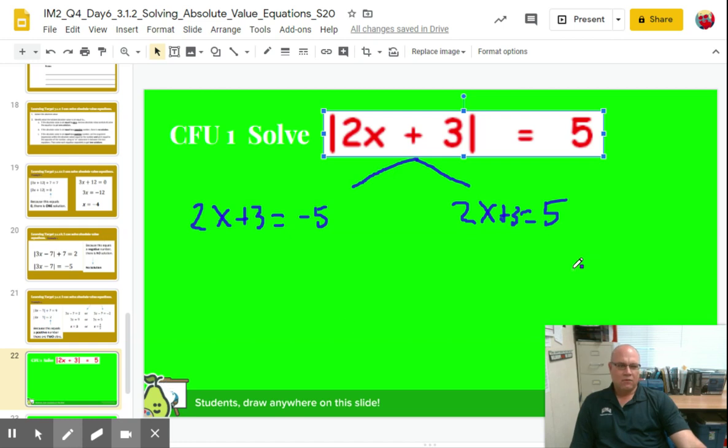All right, so now we just solve each equation. Subtract 3 from both sides, subtract 3, subtract 3. We get 2x equals negative 8. Divide by 2 both sides, x equals negative 4.